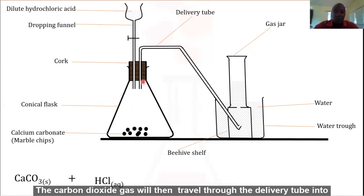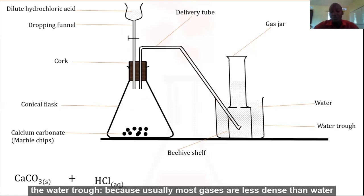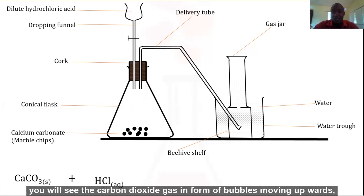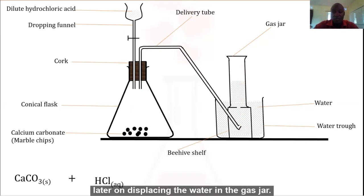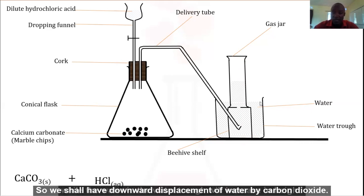The carbon dioxide gas will then travel through the delivery tube into the water trough because usually most gases are less dense than water. You will see the carbon dioxide gas in the form of bubbles moving upwards, later displacing the water in the gas jar. The water in the gas jar will move downwards while the water in the water trough will increase in height. So we shall have downward displacement of water by carbon dioxide.